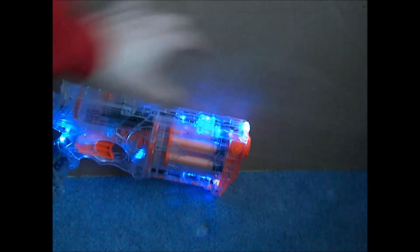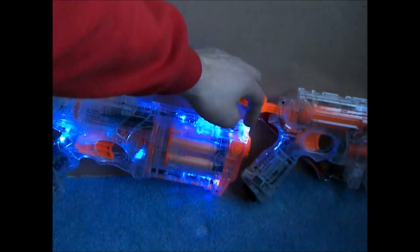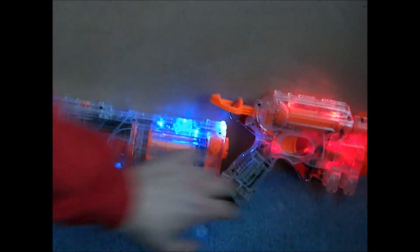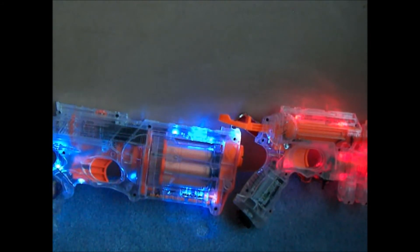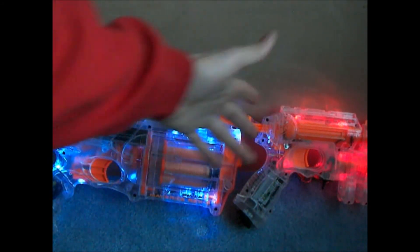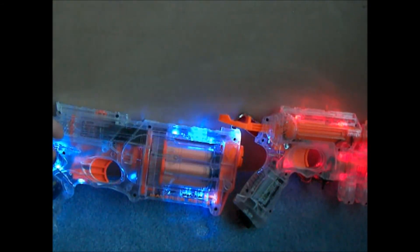And here's the Night Finder as a comparison. The Maverick obviously has 12 LEDs and my Night Finder has only 8. And they're obviously red. But if you want to check out the Night Finder, I have a full tutorial very similar to this. And the link will be in the description.